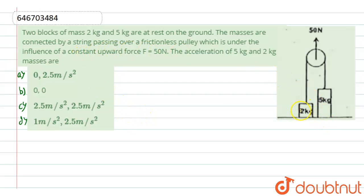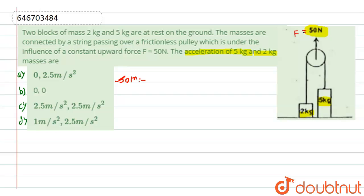In this question, we have two masses of 2kg and 5kg which are connected through a string, and the string passes over a pulley. Now, if the pulley is pulled with a constant upward force F equals to 50 newton, we have to find the accelerations of the 5kg and 2kg masses.